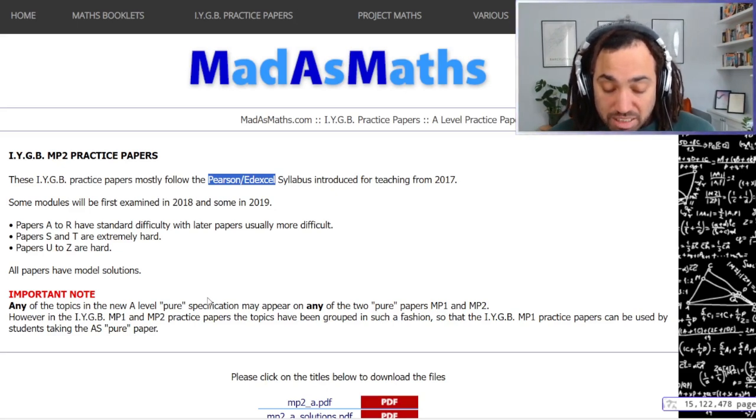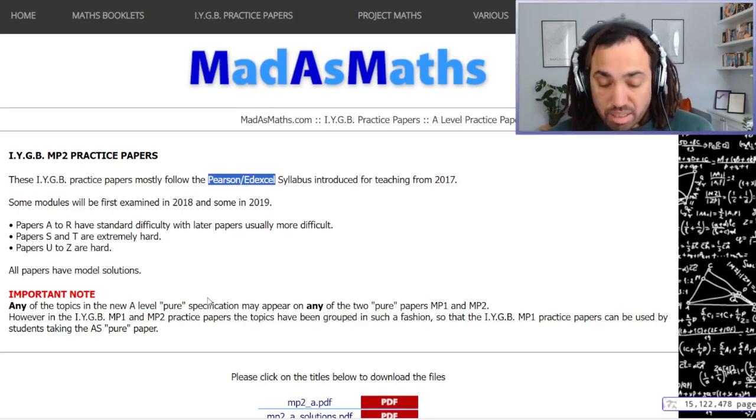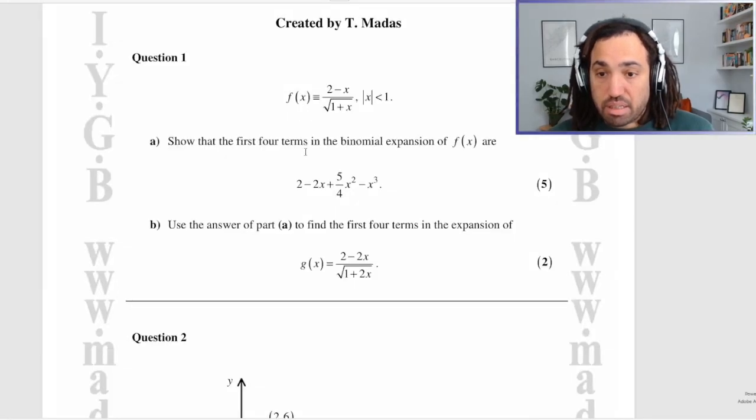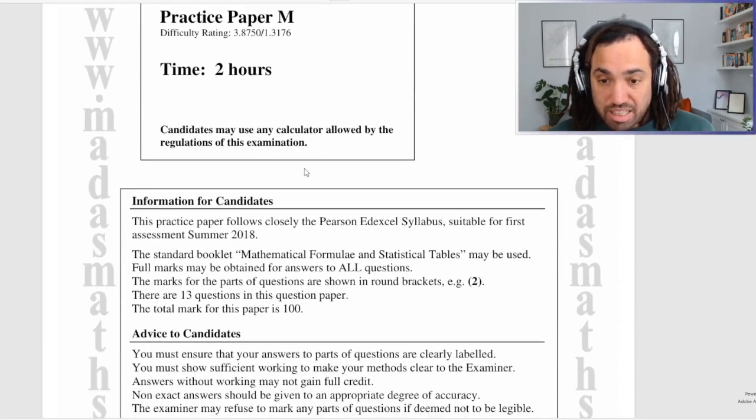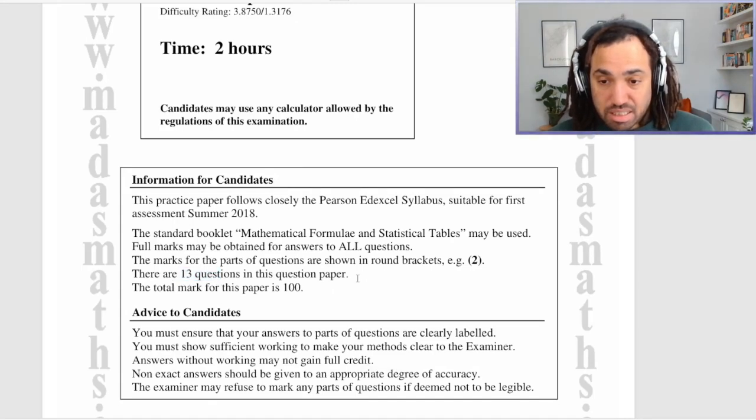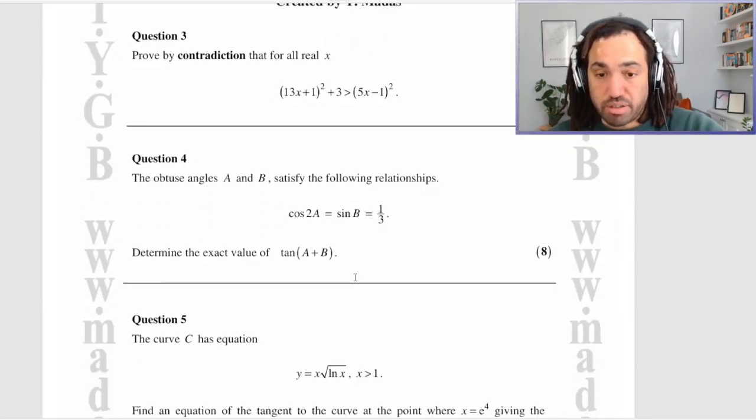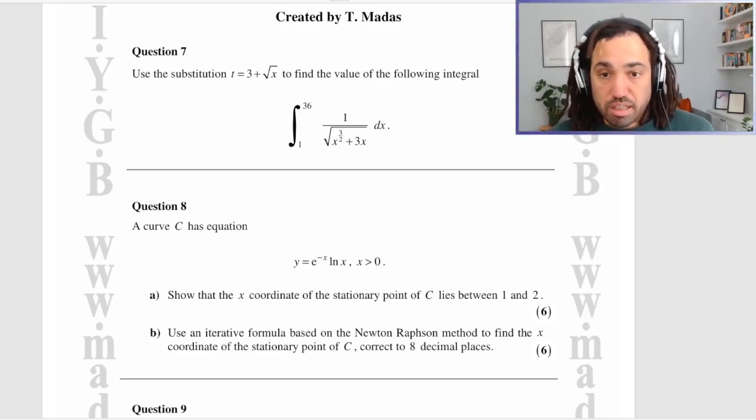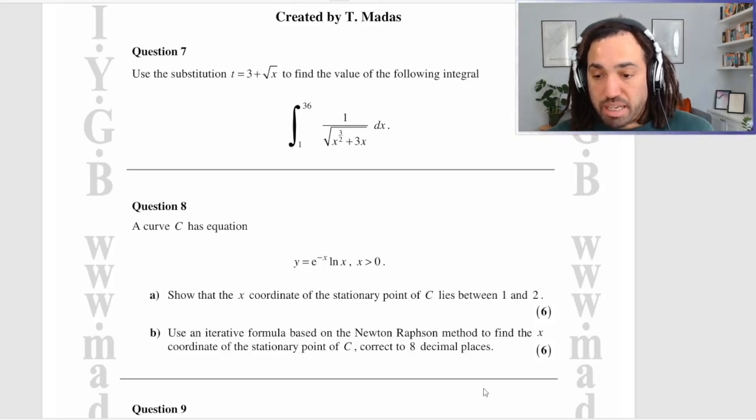Okay, give me a random letter from A to Z. Sure, how about the letter M? Okay, M it is, so let's go down. Could you give me a random number between 1 and 13? Of course, how about the number 7? Lovely, integration by substitution. Okay, I'm going to copy that and then I'm going to go put it in my notebook. And then we will do this question.